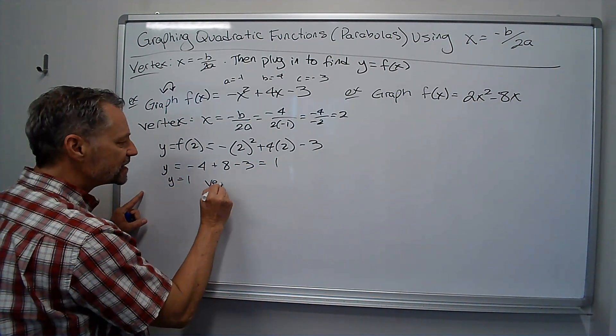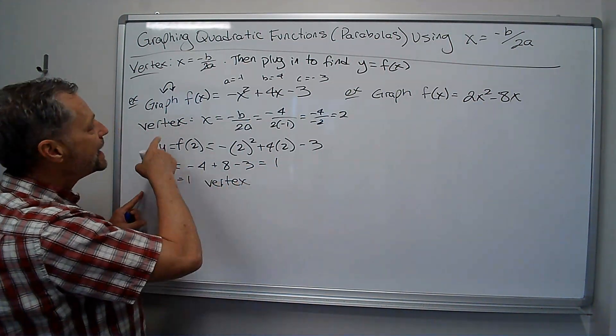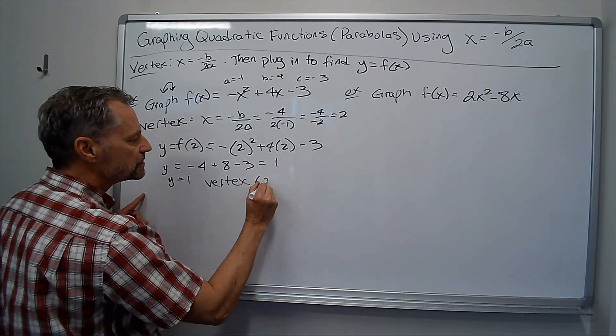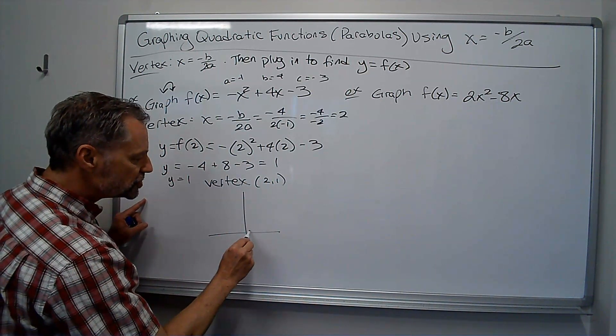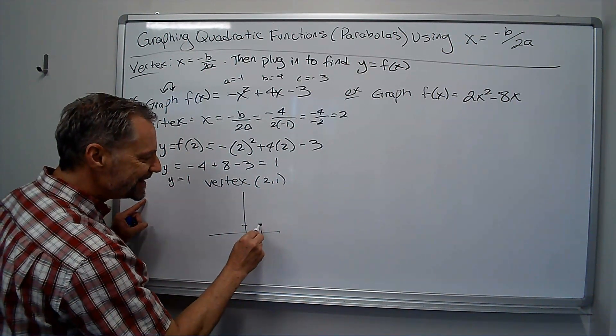My vertex, xy, well, x was 2, y was 1. My vertex is 2, 1. So I go over, I go to 2, 1. There's my vertex.